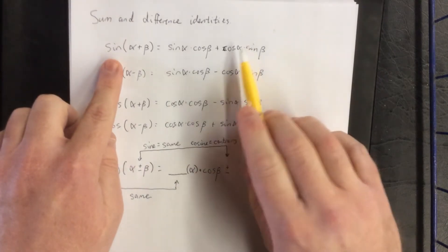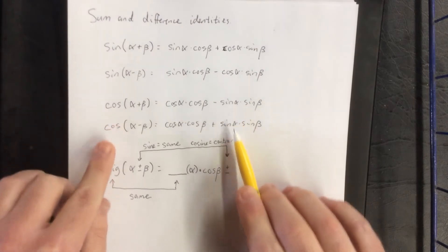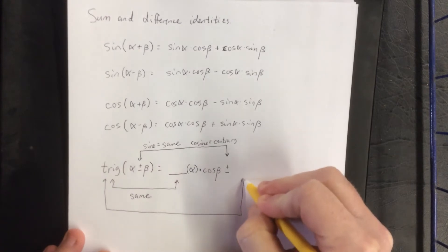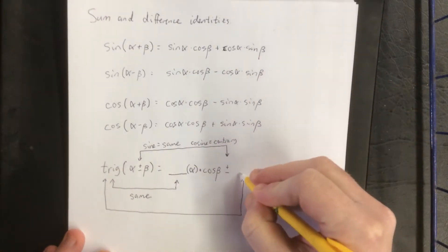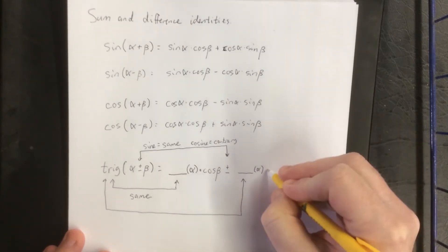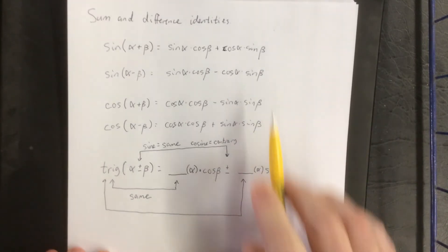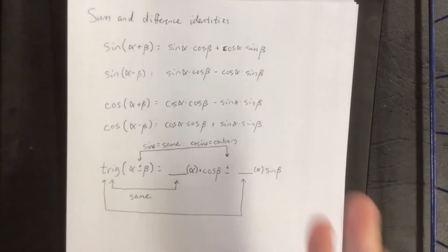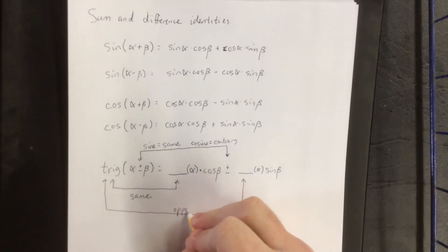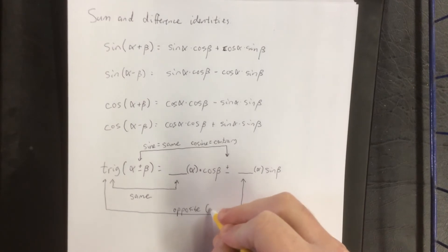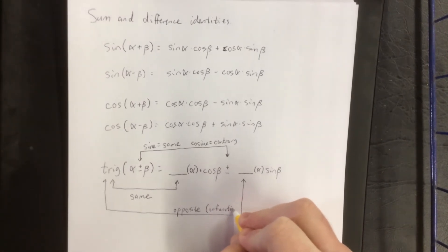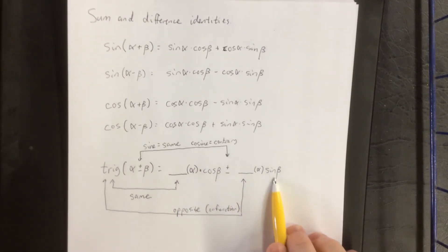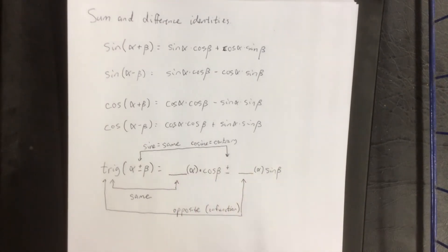For the third trig function that we write down, for the sine it'd be the cosine, and for the cosine it's the sine. The fourth thing you're going to write down is going to be the sine of beta. All four of these use each of sine alpha, cosine alpha, sine beta, and cosine beta exactly once. So this one's going to be the opposite, or the co-function. As long as you remember that cosine beta goes in the second spot, sine beta goes in the fourth spot, and that the sign is the same, you just fill in the gaps with the last one.